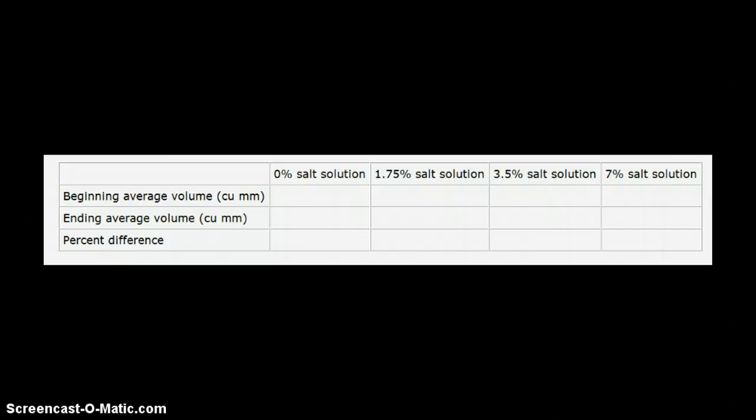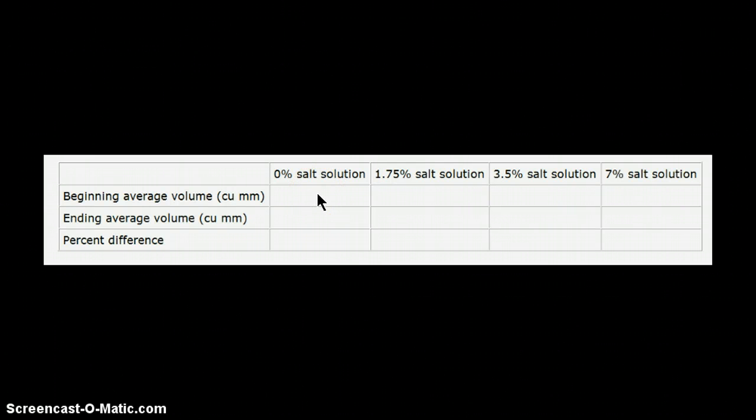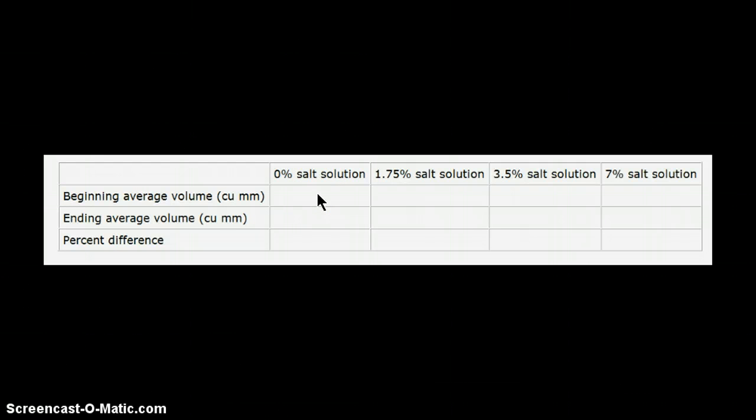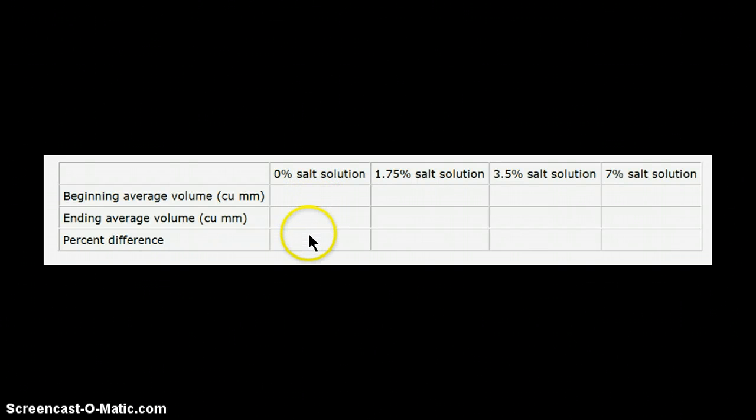Let's go back to the data table for just a minute. You know that you're starting out with a beginning average volume of about 4,000 cubic millimeters. You record your ending average volume in cubic millimeters. If your cores end up larger after soaking in the solution than they were at the beginning, then the percent difference is going to be an increase.